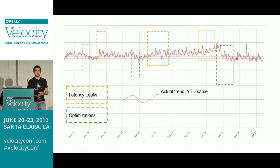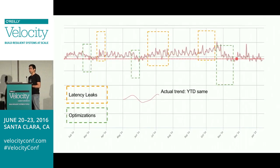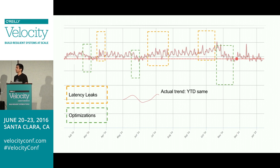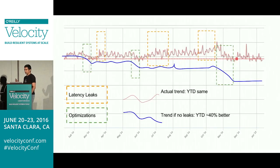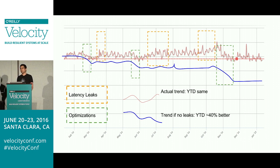Somehow this optimization didn't stick. You can see the orange rectangles where there are latency leaks creeping into the site — page load time getting slower and slower during these times. According to our calculations, if these latency leaks hadn't occurred, we would actually be 40% better year over year.